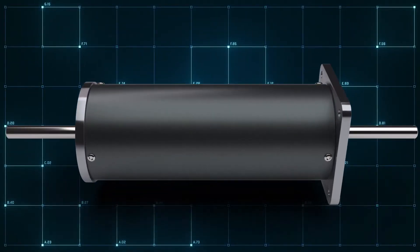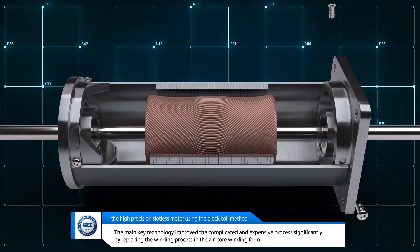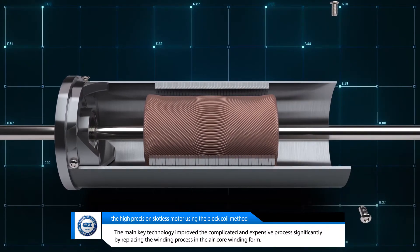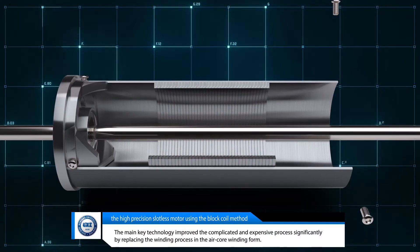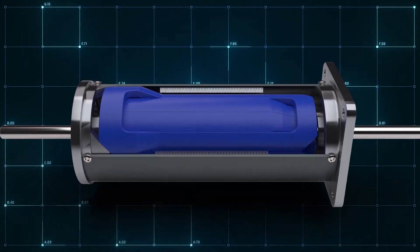The main key technology improved the complicated and expensive process significantly by replacing the winding process in the air-core winding form, which is the core process of the previous slotless motor manufacturing, with the block-formed coils.